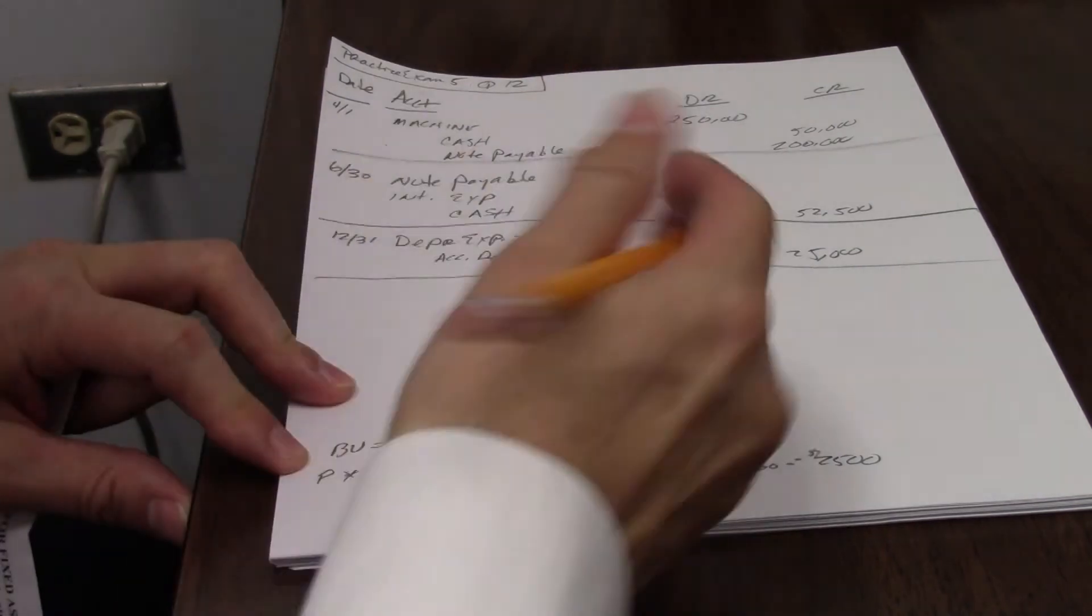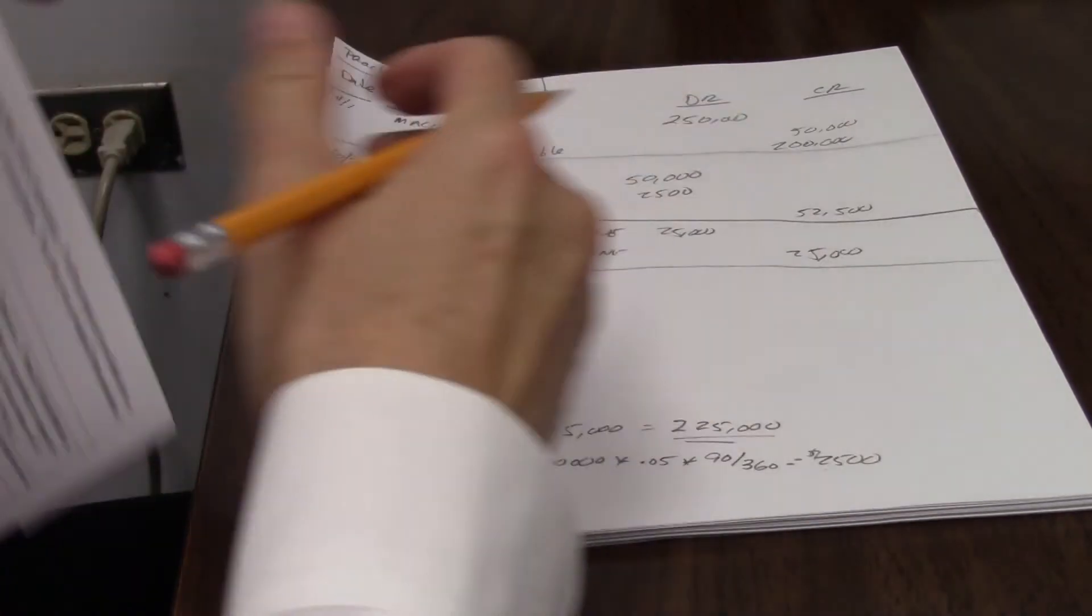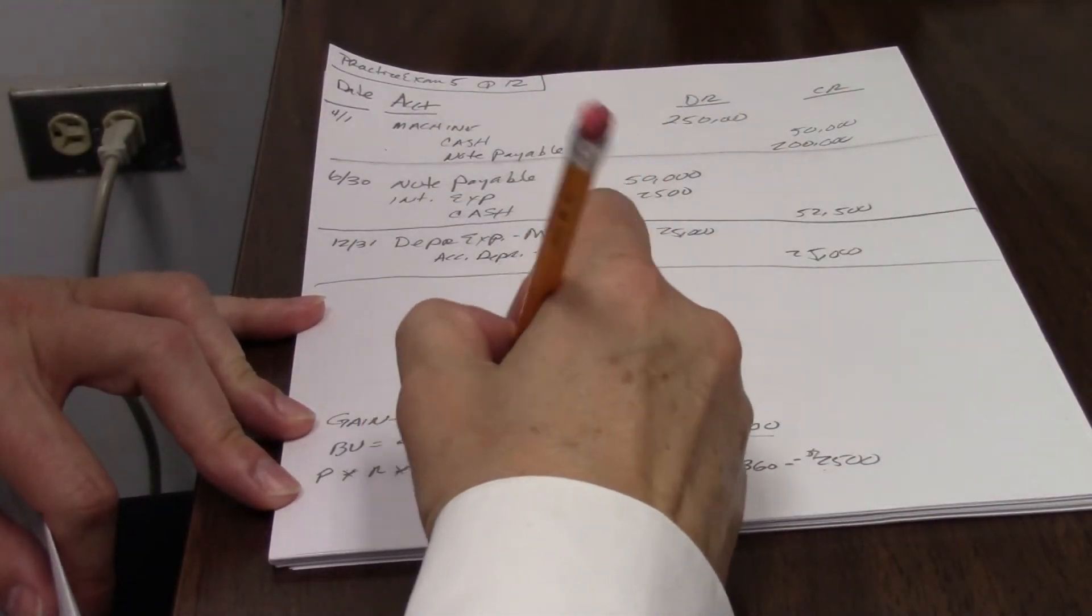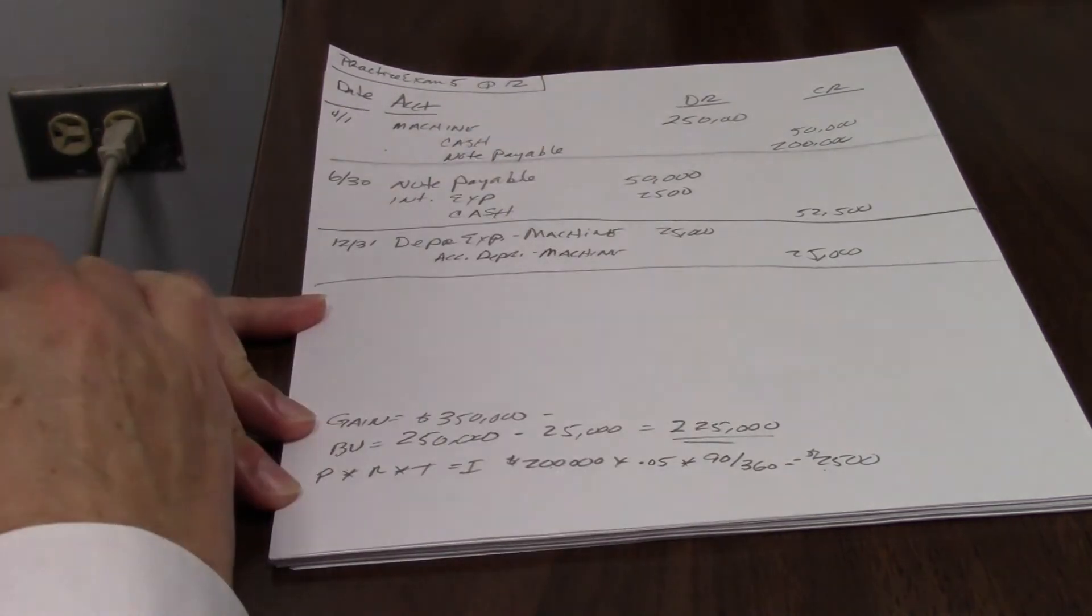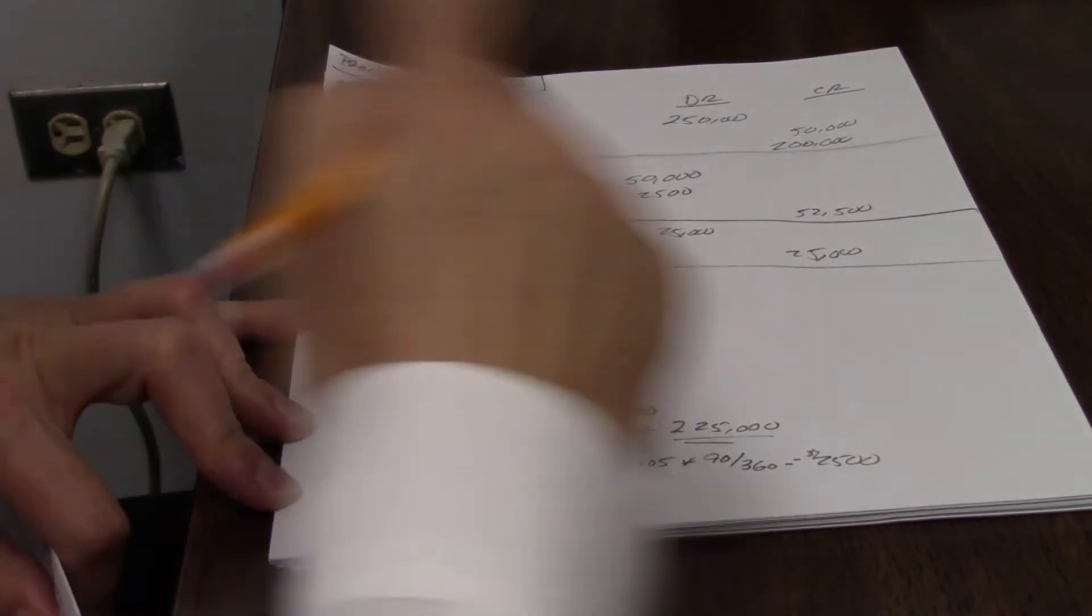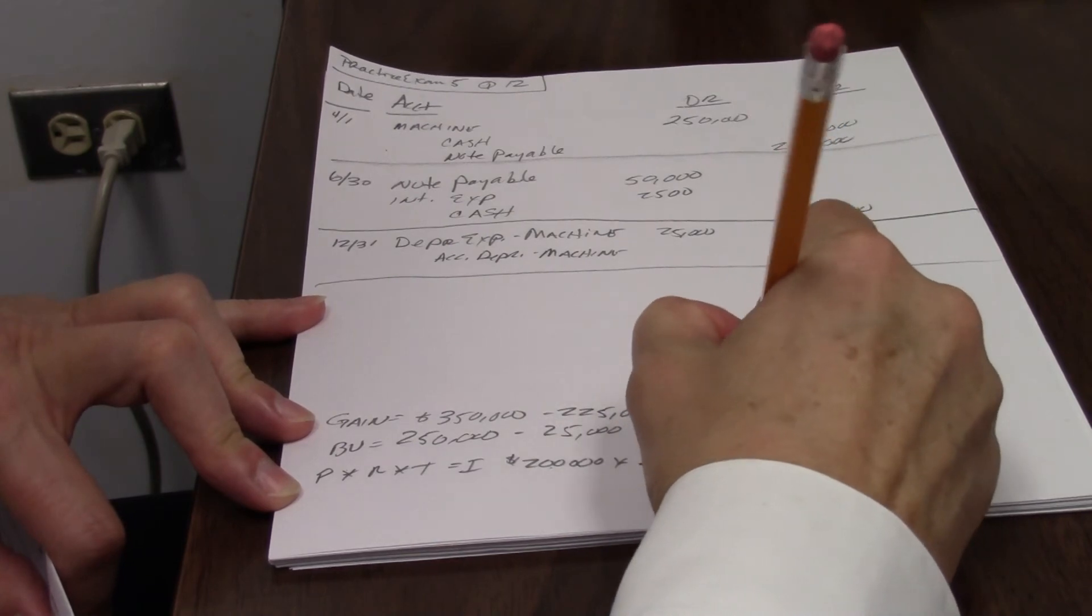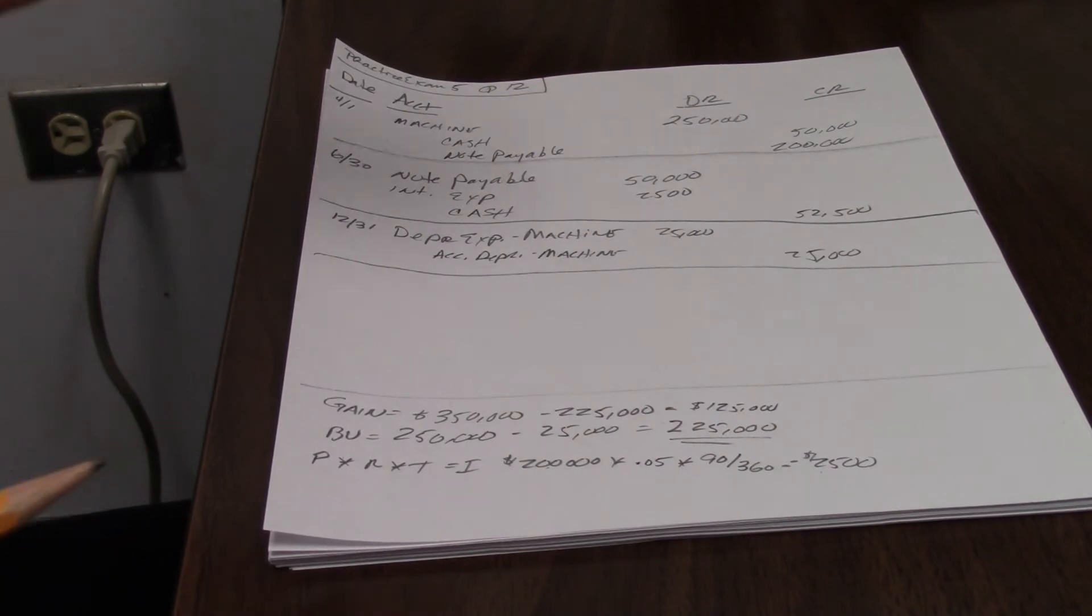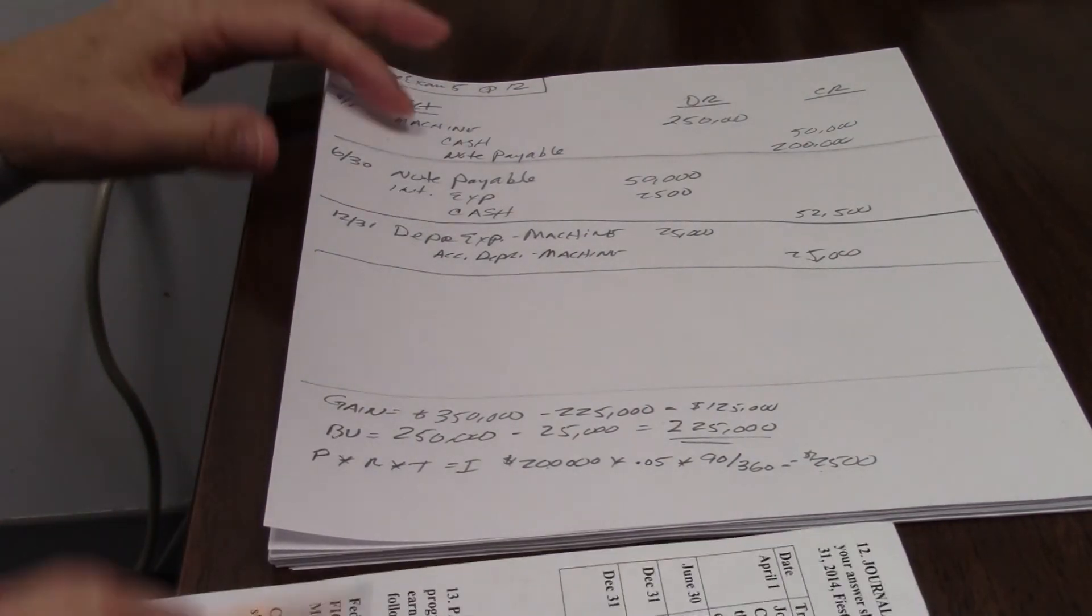So that means the gain is the difference between the sales price. They're going to give us $350,000 for that machine minus $225,000, what I have it on the books for. And that means my gain is $125,000. So I need that stuff. Now I have what I need to do my entries.